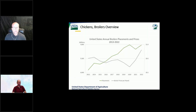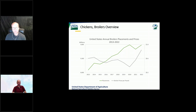NASS conducts a weekly Broiler Hatchery Report that captures eggs set, chicks hatched, and chicks placed. This data is from hatcheries that hatch at least one million chicks on an annual basis. The annual production for chicken broilers has been a linear incline since 2013, although there's a slight dip in 2015 due to the HPAI and a drop in 2021. The prices per pound for broilers has ranged from $0.36 in 2020 to as high as $0.846 in 2022.